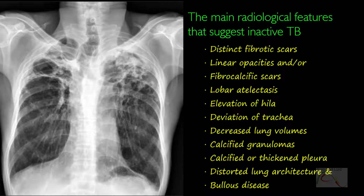Not all features may be present on one x-ray. This, however, is a very good example, as it shows most of the features. Airspace opacification or haziness within the lung parenchyma indicates an active disease.